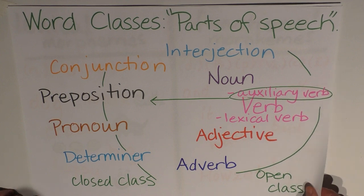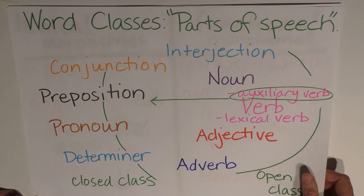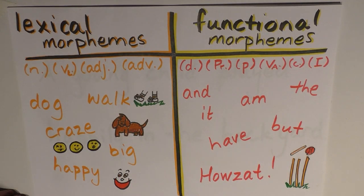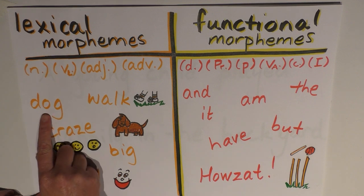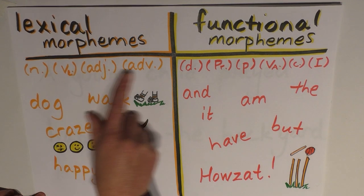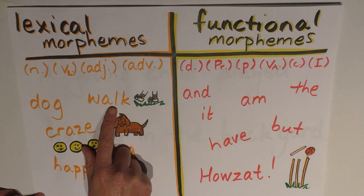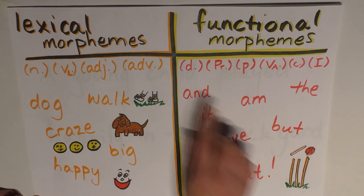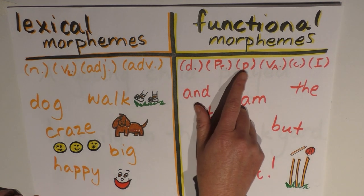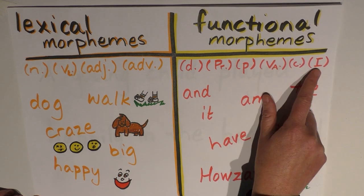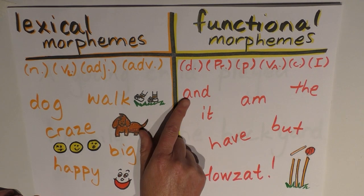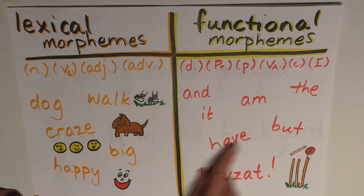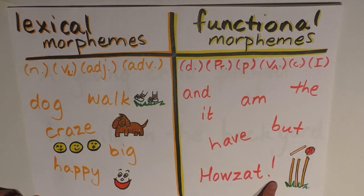Let's have a look at these words. Examples of lexical morphemes — which are nouns, verbs, adjectives, and adverbs — include: dog, walk, craze, big, happy, and so on. Examples of functional morphemes — which are determiners, pronouns, prepositions, auxiliary verbs, conjunctions, and interjections — include things like: and, it, am, the, but, have, and 'how's that.'